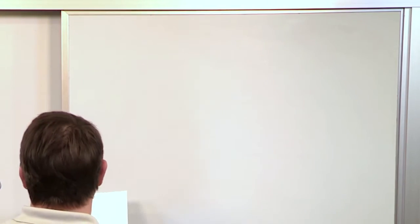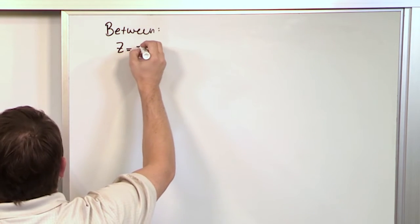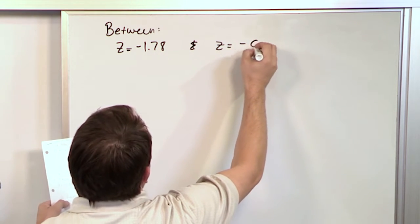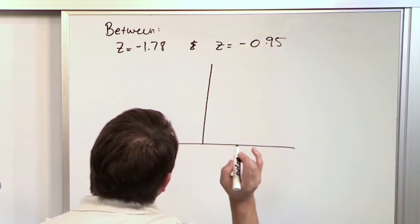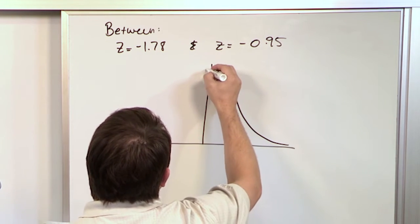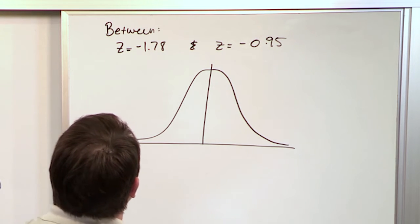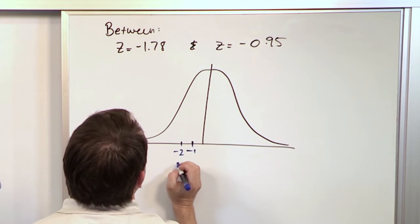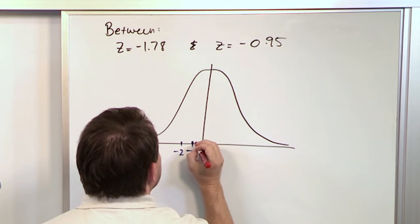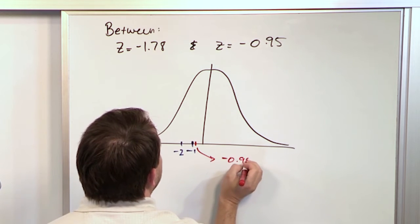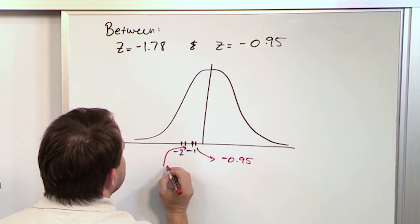Let's get more practice. We want to find the area between z = -1.78 and z = -0.95. First, let's draw a picture — I encourage you to do this anyway, especially in the beginning, because if you don't, you'll probably end up making a mistake. On the standard normal distribution, negative 0.95 is just before negative 1, and negative 1.78 is a bit further left.